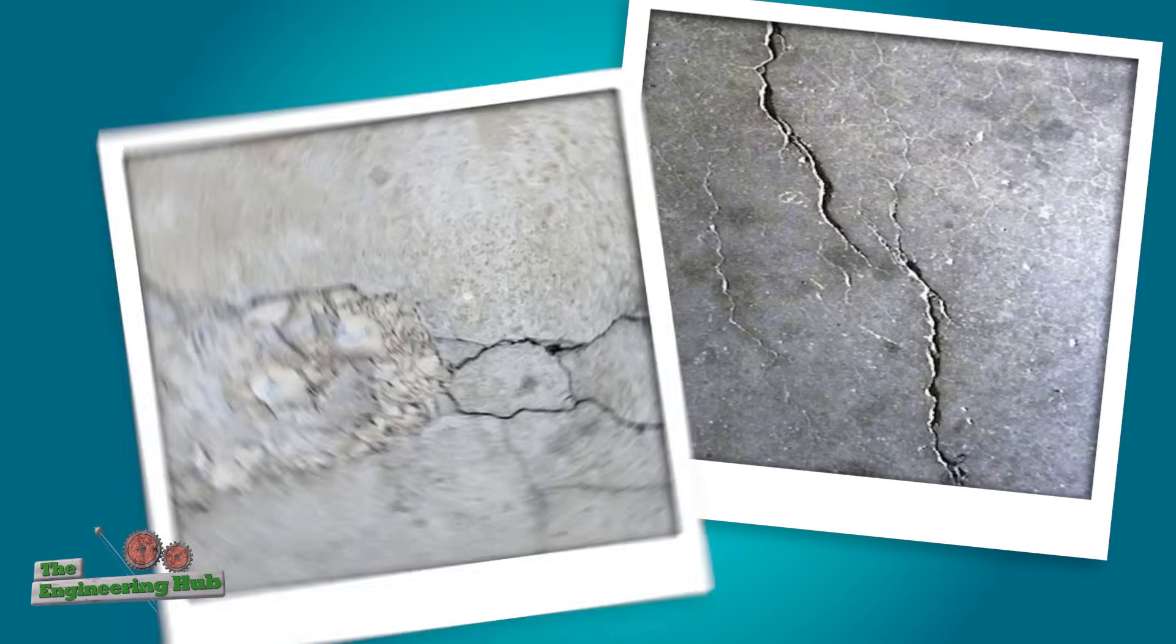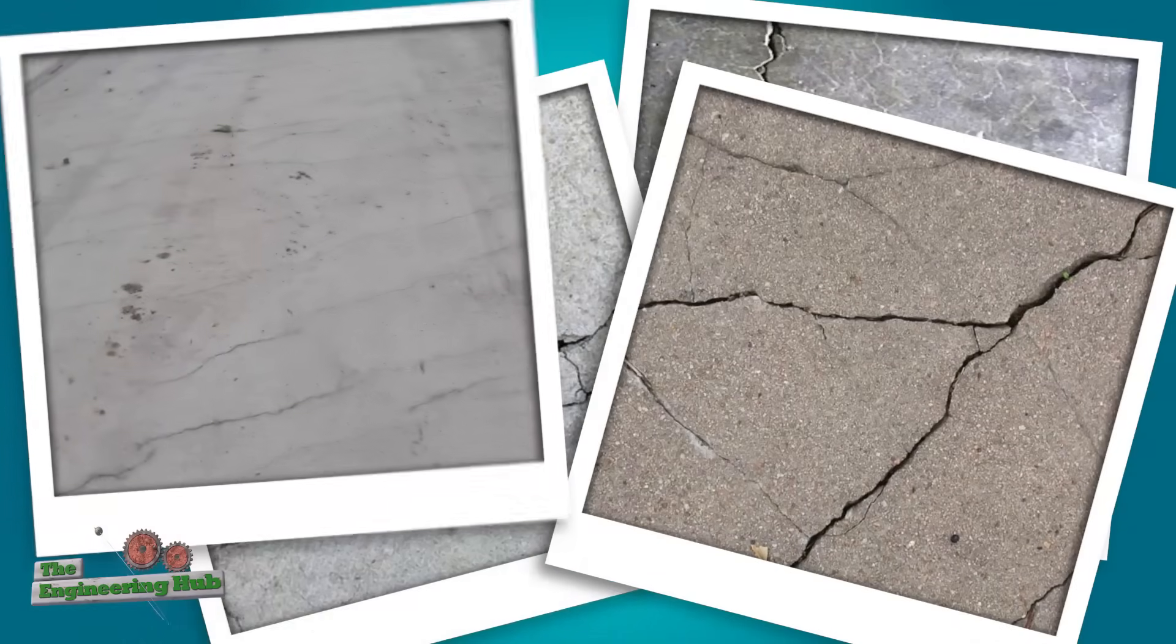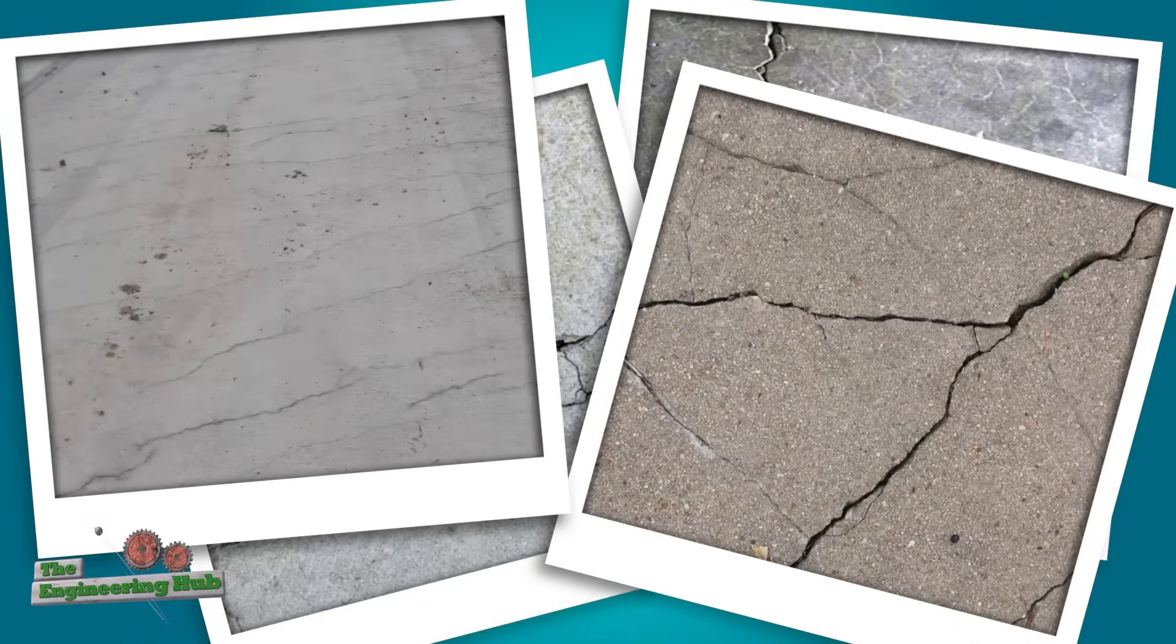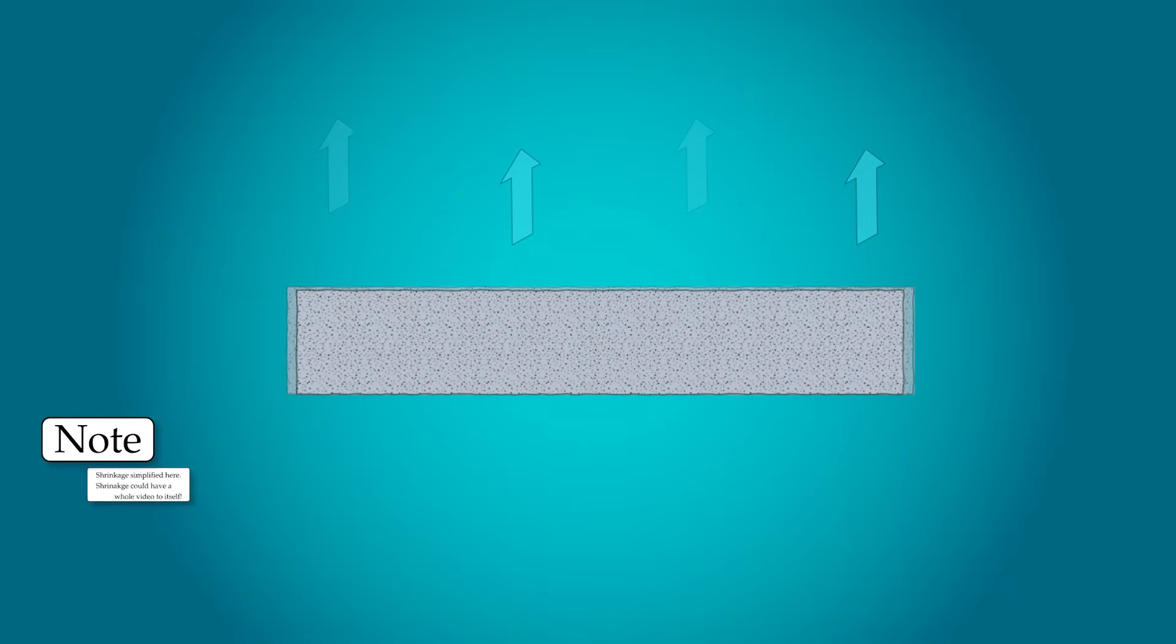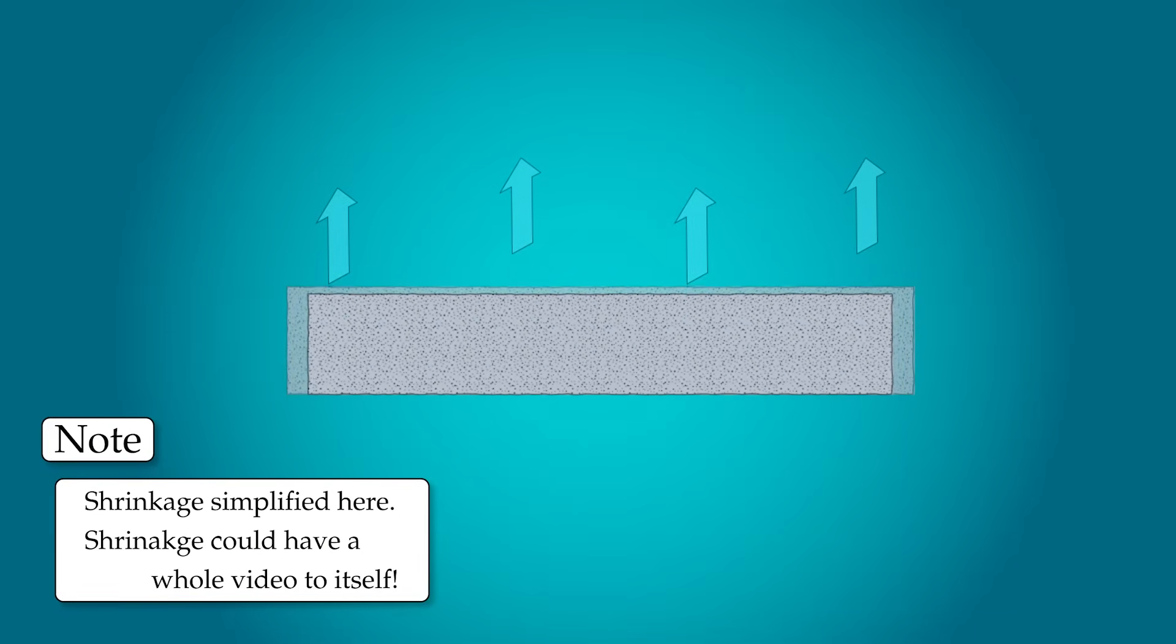Early pre-stressed concrete designs made the mistake of not properly accounting for concrete shrinkage. As concrete cures, the water inside it evaporates and this causes shrinkage, which can occur for up to 18 months of curing.